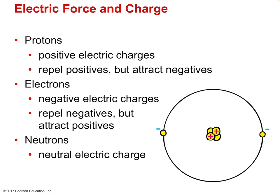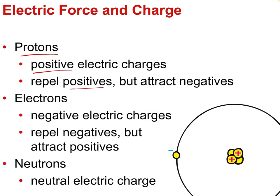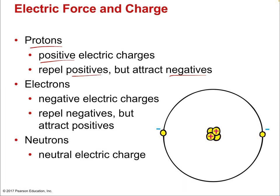Protons have positive electric charge — it's fundamental and intrinsic to the particle, just like mass. You can't break off the charge and leave the particle behind. Protons repel other positive charges but attract negative charges. Electrons, on the other hand, are negative — they repel other electrons but attract positive charges. Neutrons are neutral, so we won't discuss them much here. You can charge objects mechanically, like rubbing a balloon on the carpet, to create static electricity.